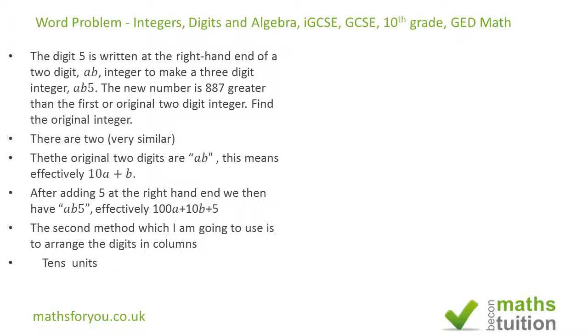So we've got a in the tens column and b under the units column. Because the second integer ab5 has got three digits, we now got hundreds, tens, and units or singles column. So a would go under the hundreds column and b under the tens column and five in the units column, as we've got here.